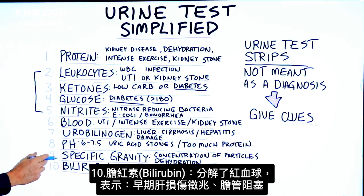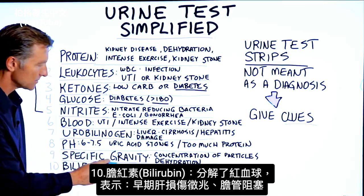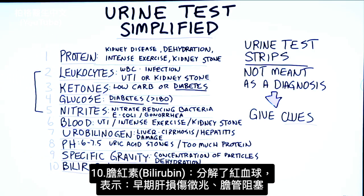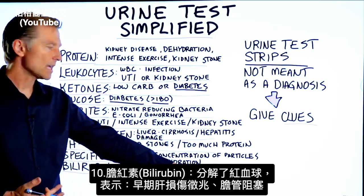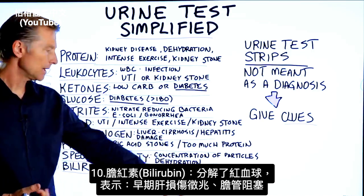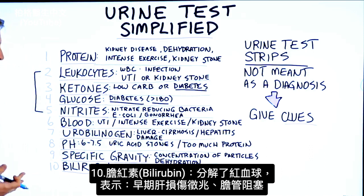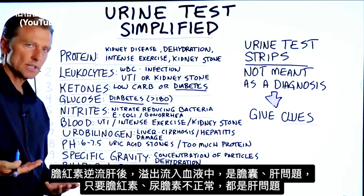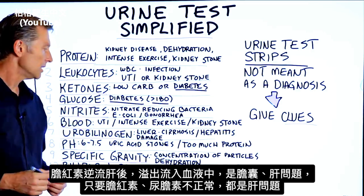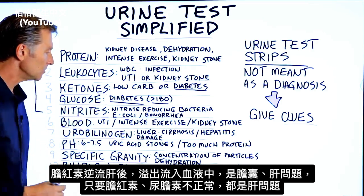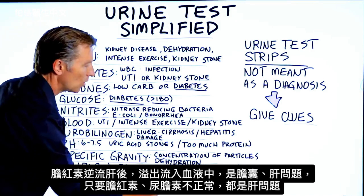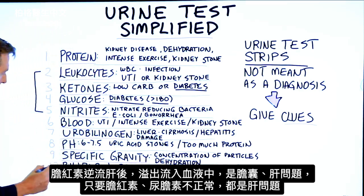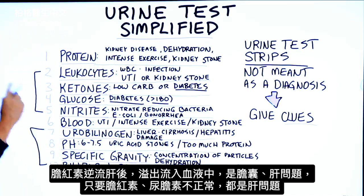Number ten, bilirubin. It's the breakdown of red blood cells. If there's bilirubin in your urine, that could be an early sign of liver damage. It can also be a blocked bile duct where everything's backing up to the liver and spilling off into the blood — so it could be a problem with the gallbladder or the liver. If there's bilirubin and urobilinogen together, think liver.